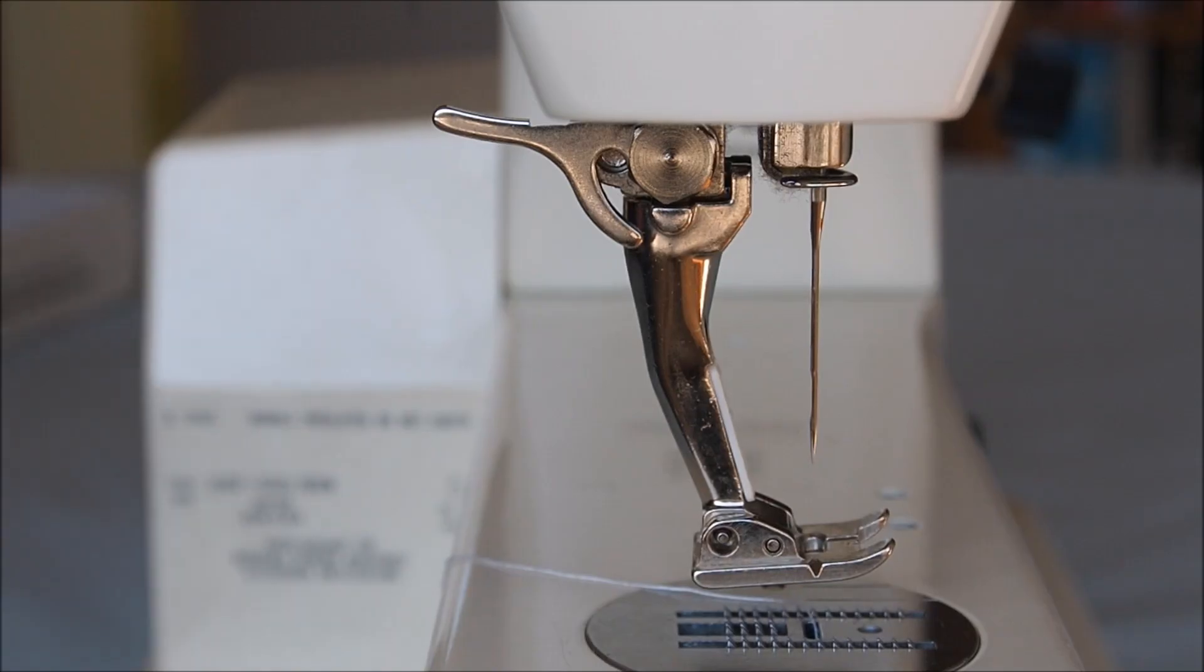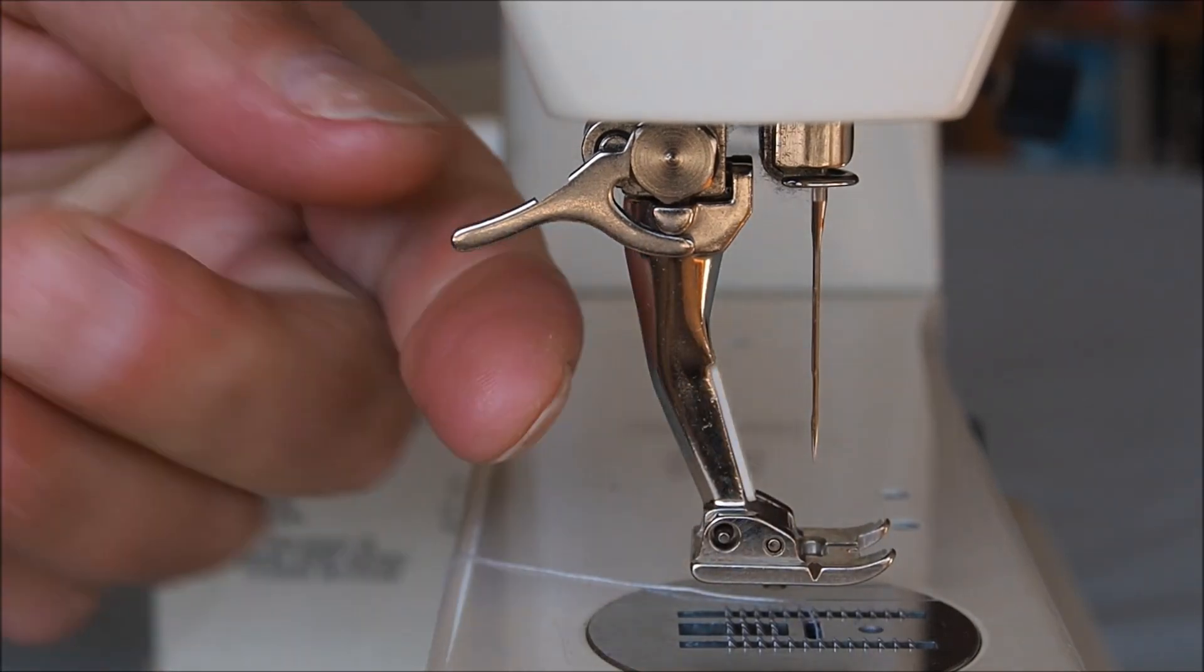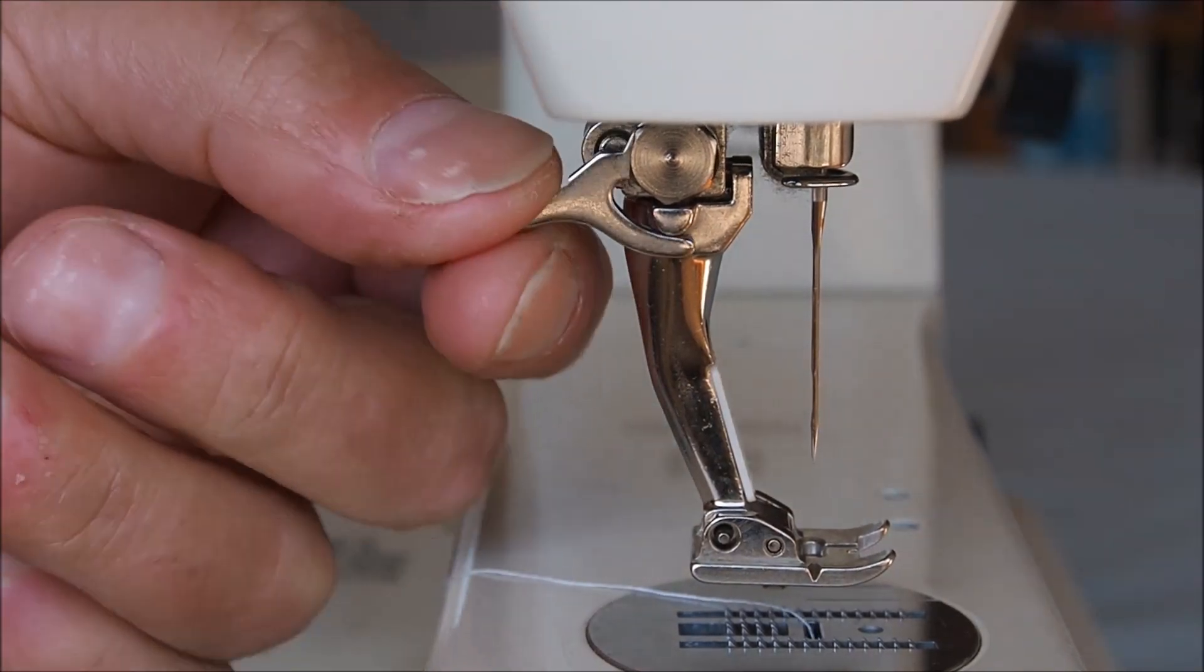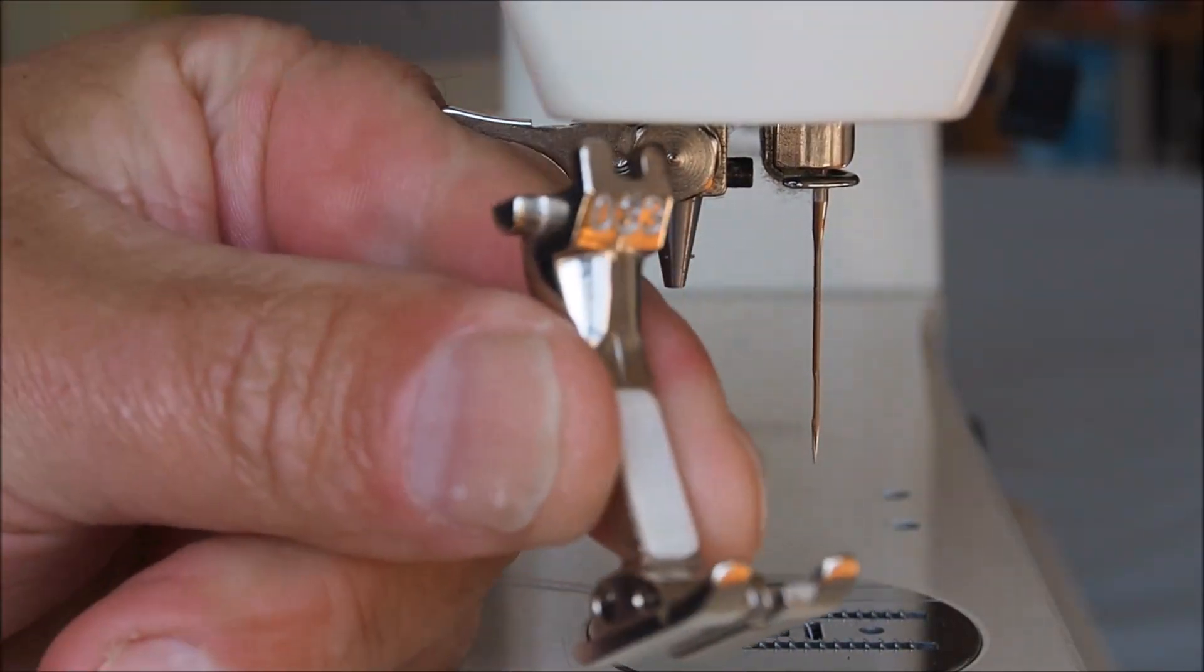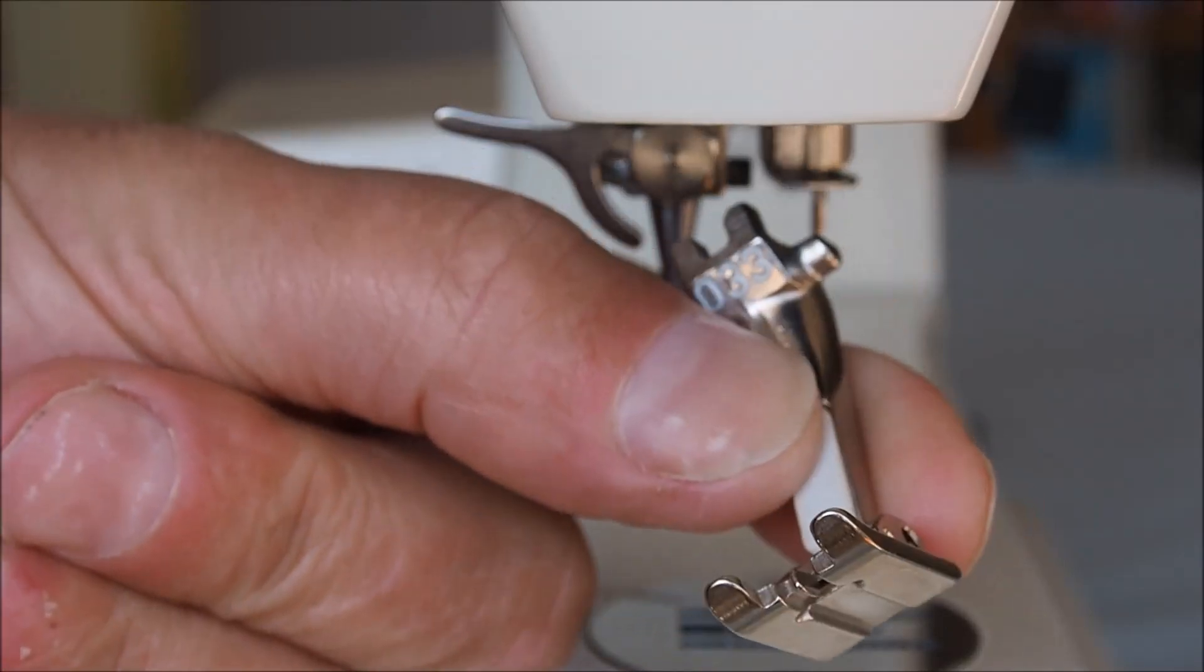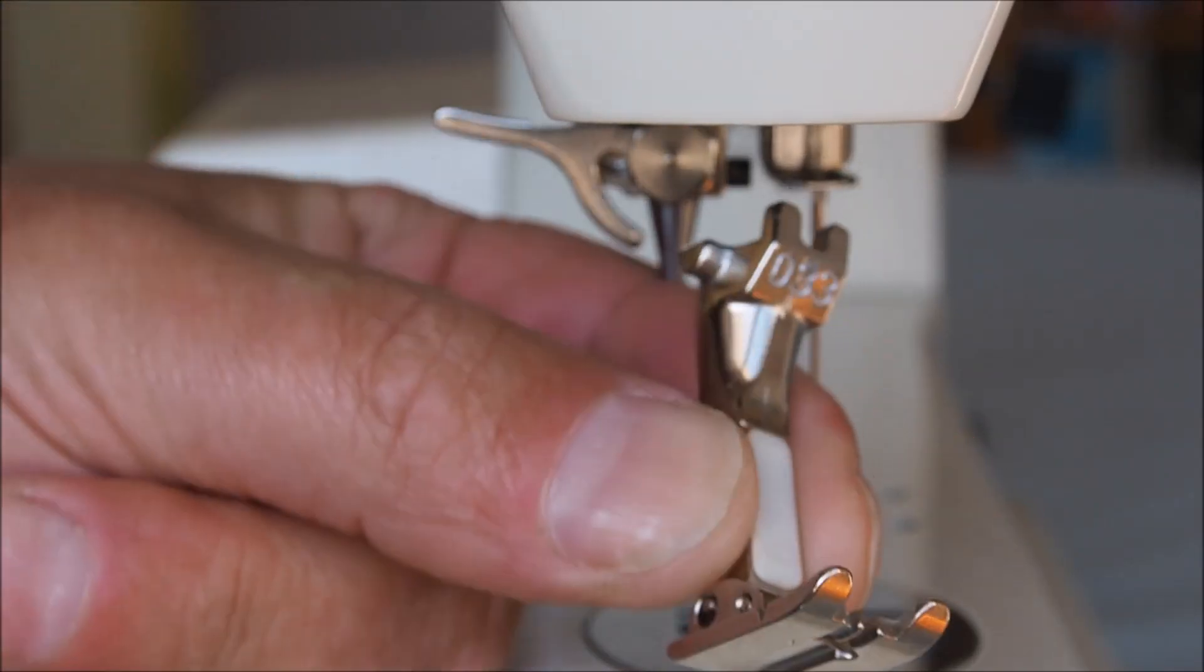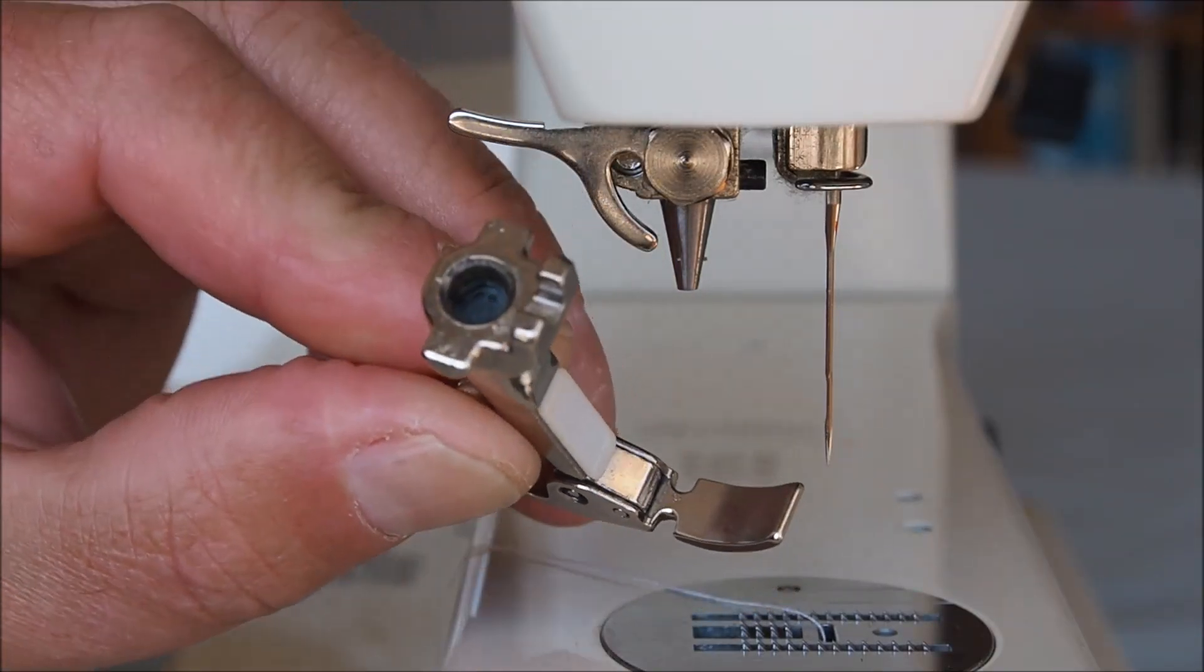As you probably already know, there is a way to interchange the feet on these machines just by releasing the little clamp here and taking off the foot. So this particular foot here is the buttonhole attachment foot and you can easily interchange feet.